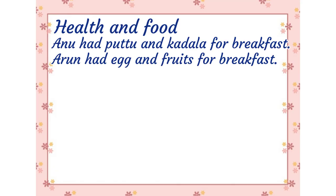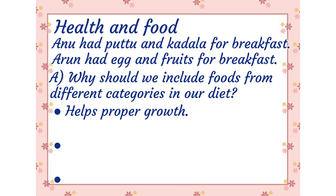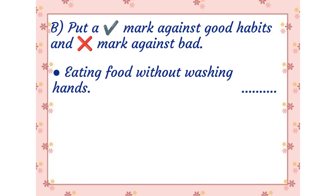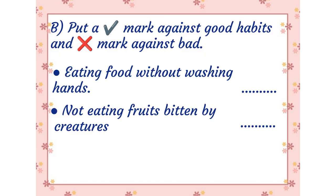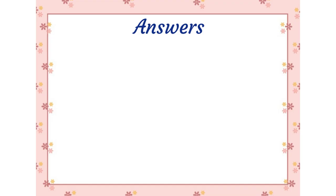Health and Food. Anu had puttu and kardala for breakfast. She says: I don't have egg and fruits for breakfast. A. Why should we include foods from different categories in our diet? Answer: It helps proper growth. B. Put a tick mark against good habits and a cross mark against bad: eating food without washing hands; not eating fruits bitten by creatures; showing reluctance to drink water.